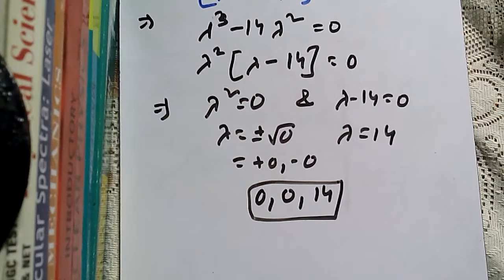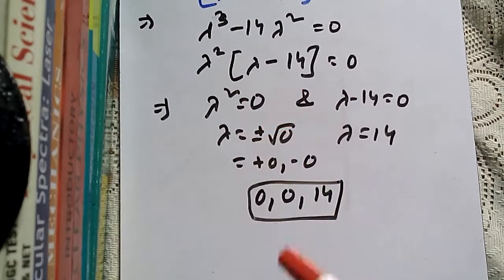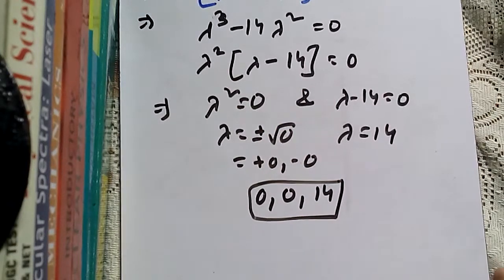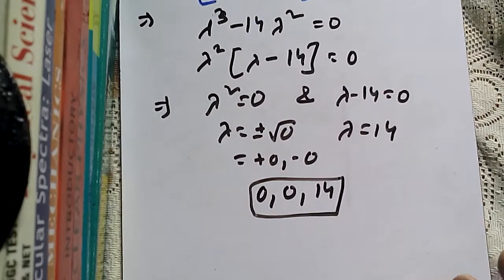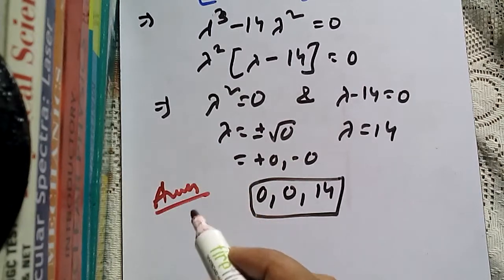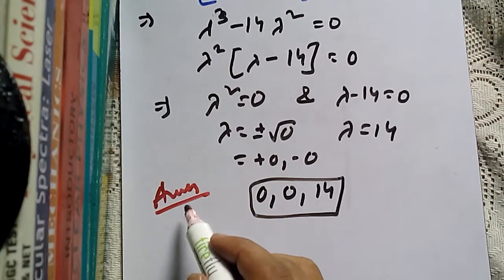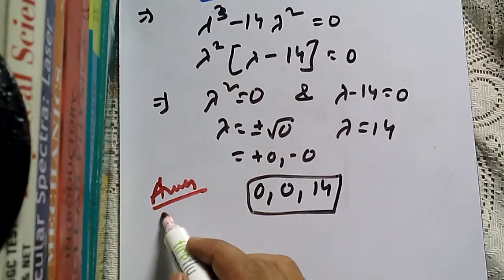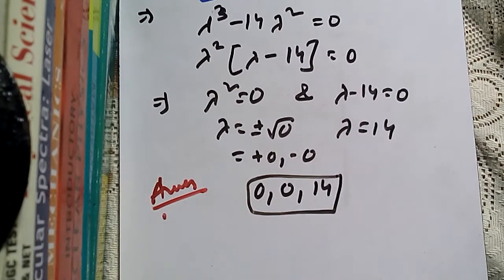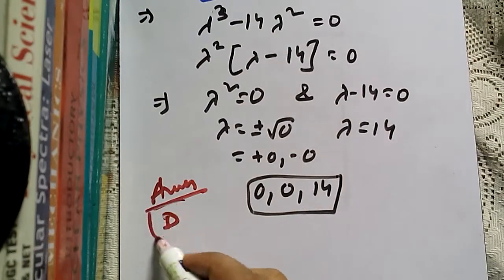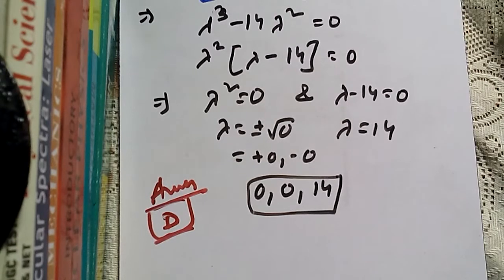Both methods gave the same eigenvalues, but the characteristic equation involved a lot more calculations. That's why I prefer the characteristic polynomial method for finding eigenvalues. For this problem, the answer is option D.